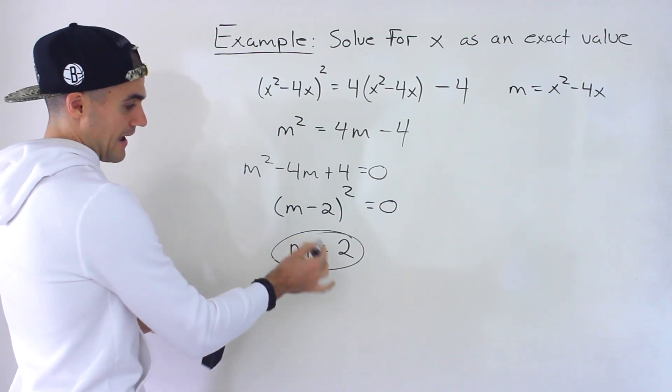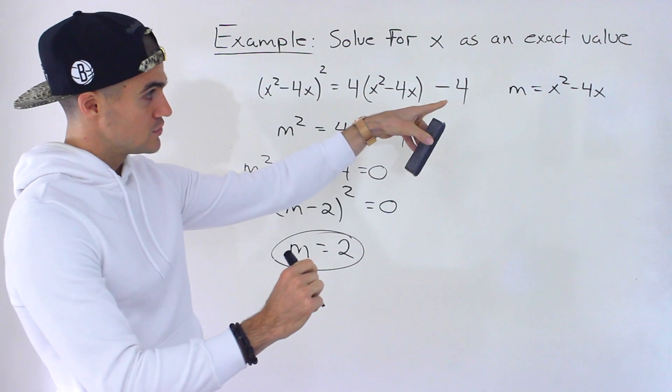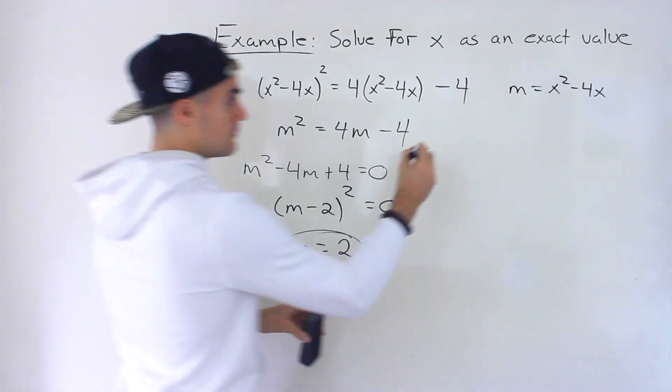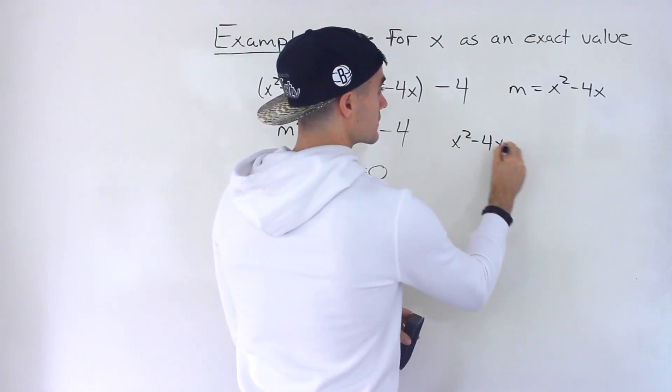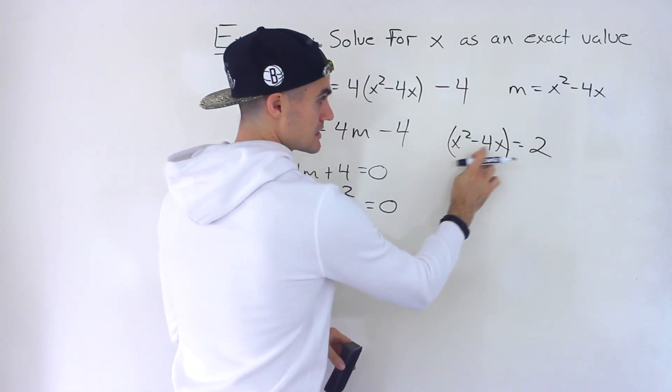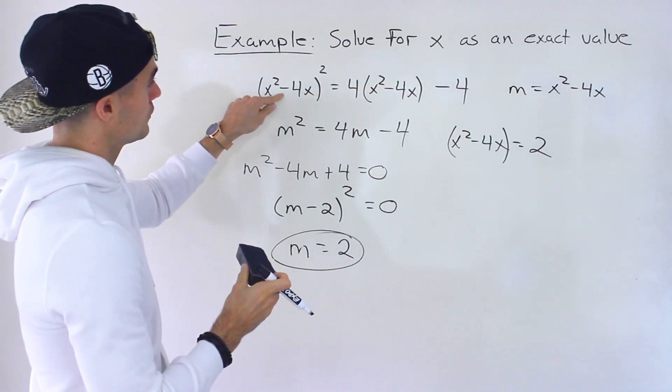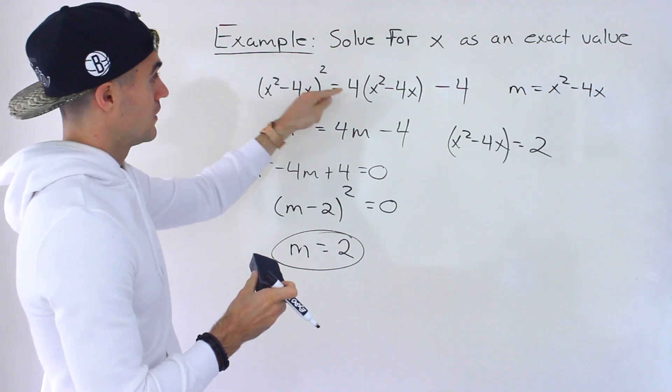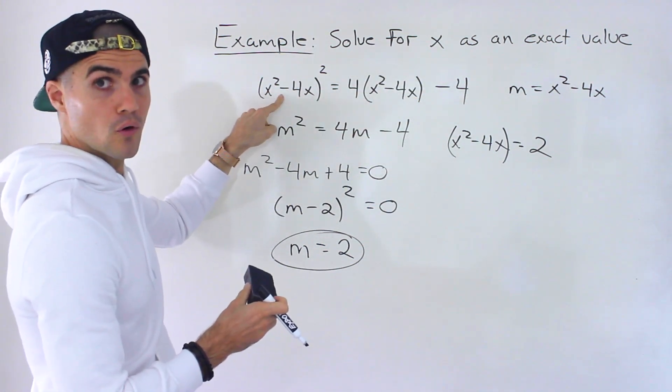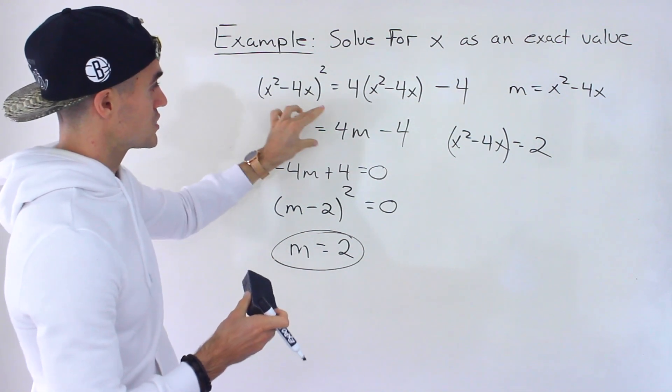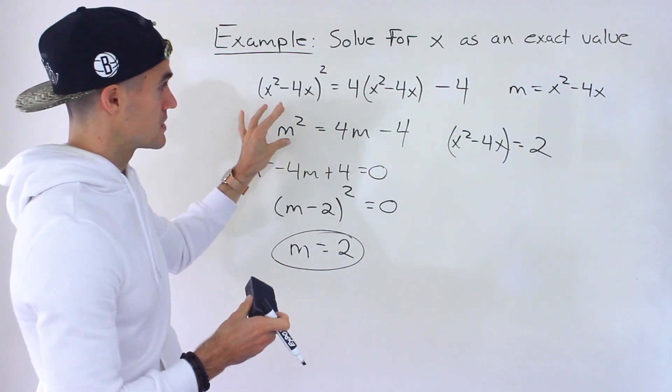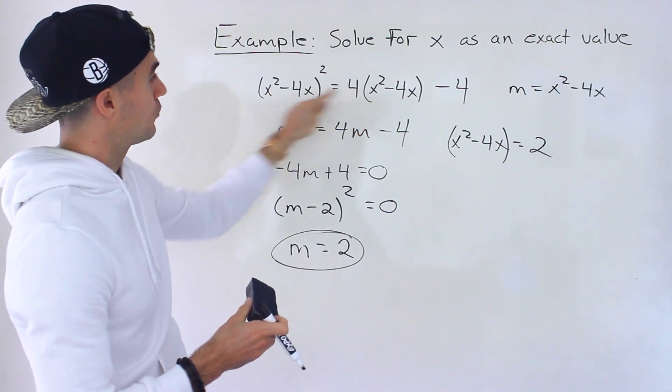And so now we're not solving for m we're solving for x but we know m is equal to x squared minus 4x. So if m has to equal 2 right from this it means that x squared minus 4x has to also equal 2. And notice that makes sense if this is equal to 2 if we plug it in here we would end up with 2 to the power 2 which is 4, 4 times 2 which is 8 and then minus 4 would be 4 so we'd have 4 on the right side 4 on the left side. And same thing here right this is just a simplified version of this plugging in 2, 2 would make both of those sides equal and so it means that that bracket both of these brackets x squared minus 4x has to equal 2.